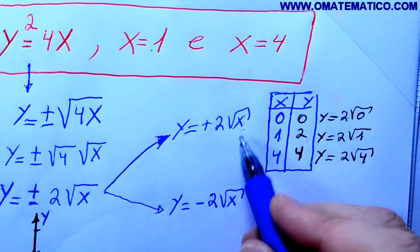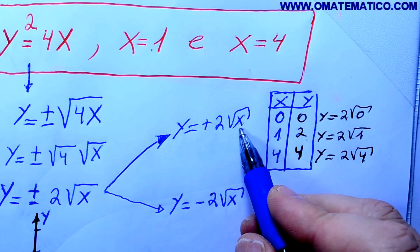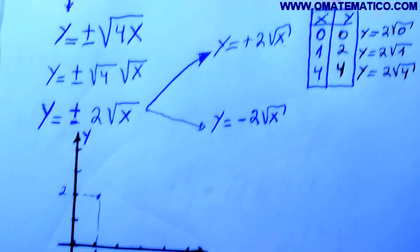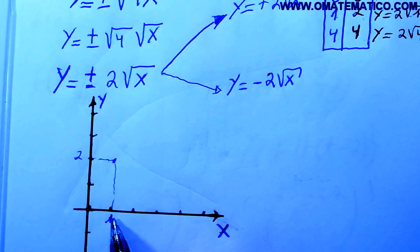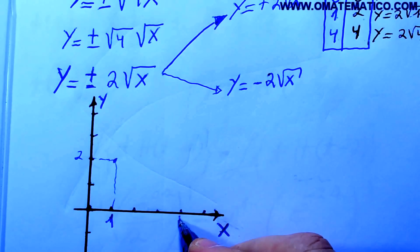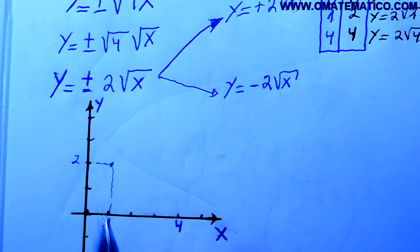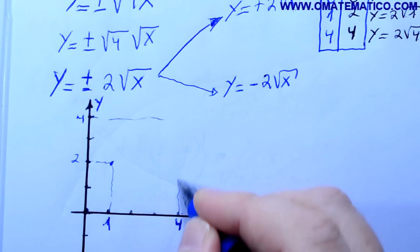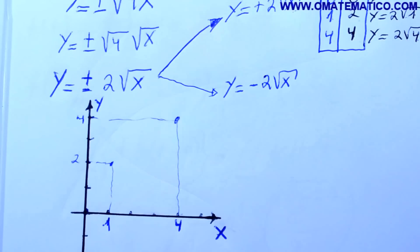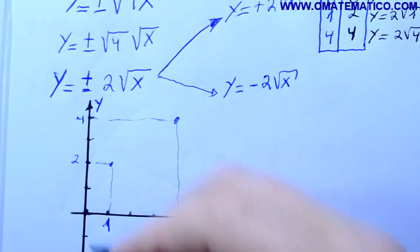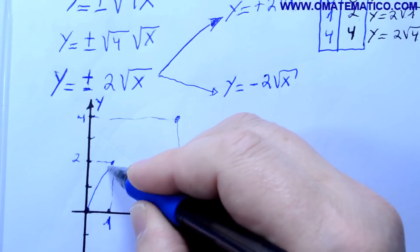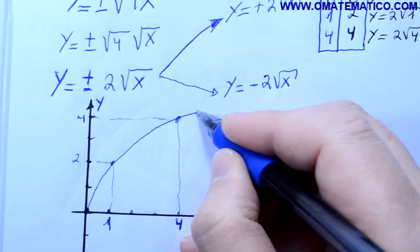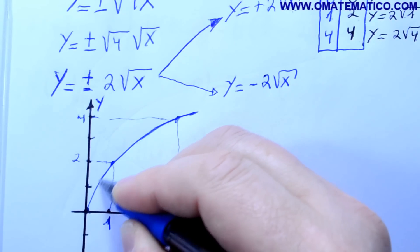Vejam que eu peguei valores que têm raiz exata para facilitar meu cálculo — não preciso usar calculadora. Quando o x é 4, 1, 2, 3, 4, o y também será 4. Então, fazendo o contorno, vai dar algo assim. Aí está o gráfico.